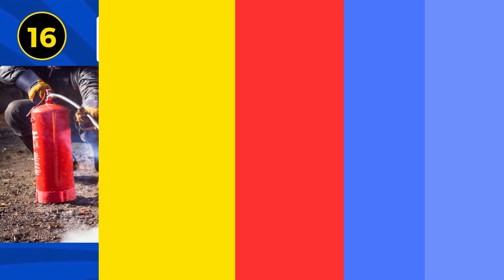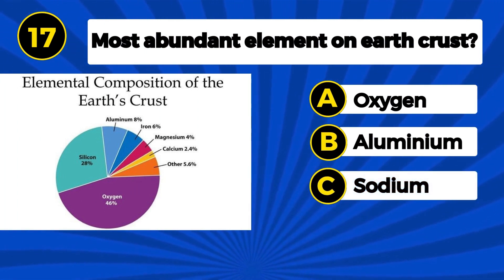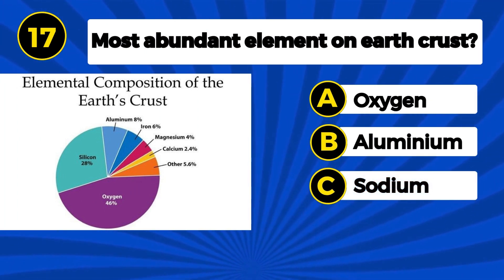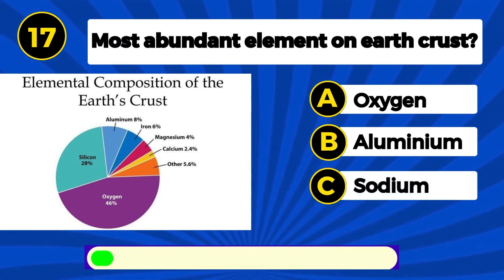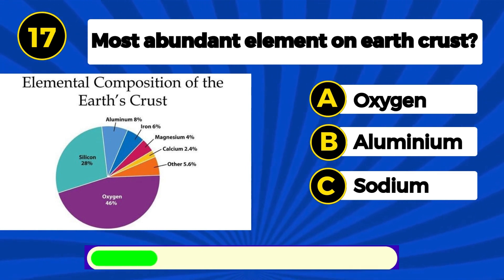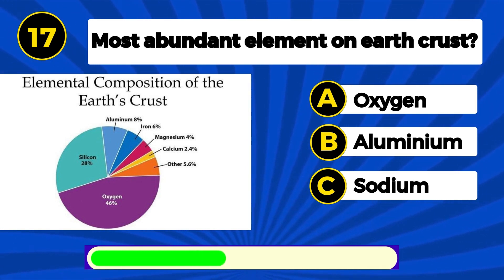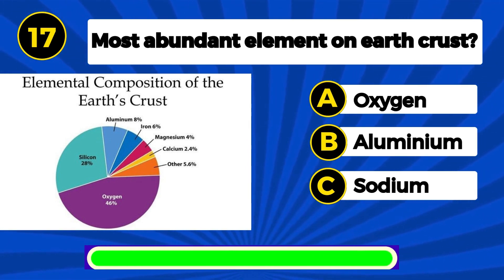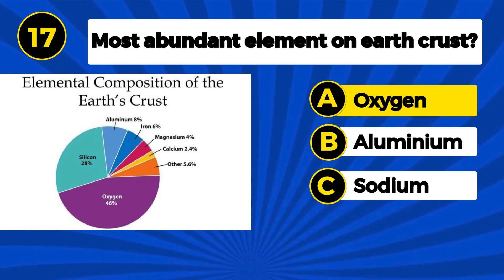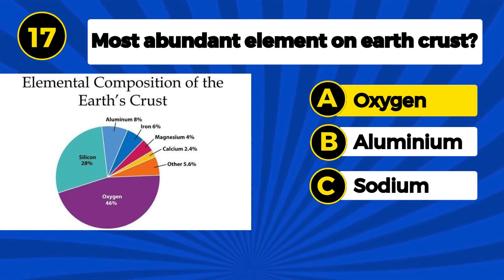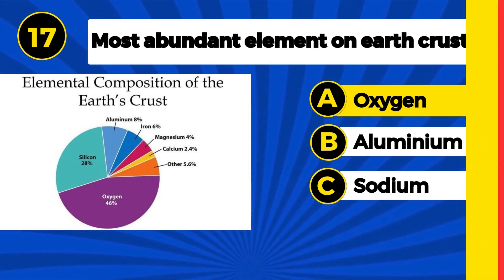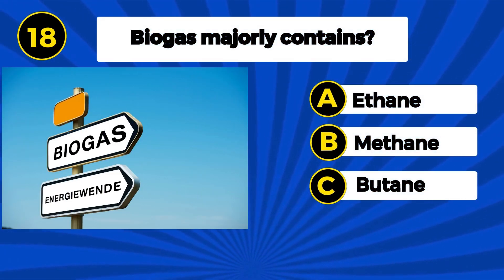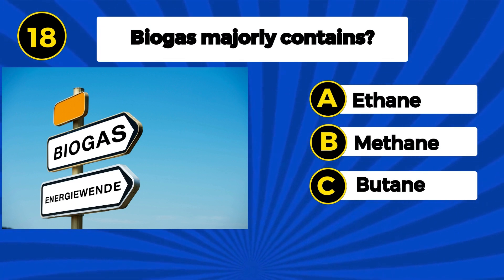Most abundant element on earth's crust? Oxygen. Biogas majorly contains?